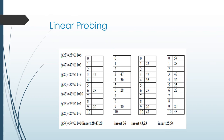Next is linear probing. 28 mod 11 equal to 6, so the value 28 is placed in the hash table at key value 6. 47 mod 11 equal to 3, so 47 is placed at key value 3. 20 mod 11 equal to 9, so 20 is placed at key value 9. 36 mod 11 equal to 3. It cannot be placed at key value 3 because already 47 is placed there, so it is placed in the next key value, which is 4.